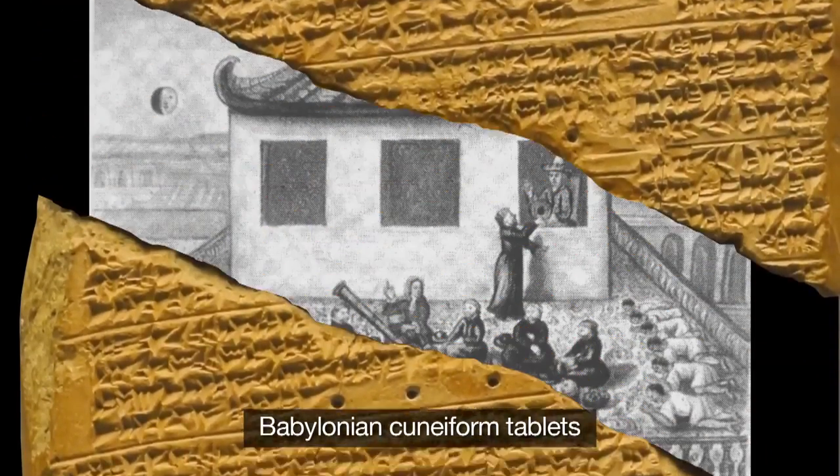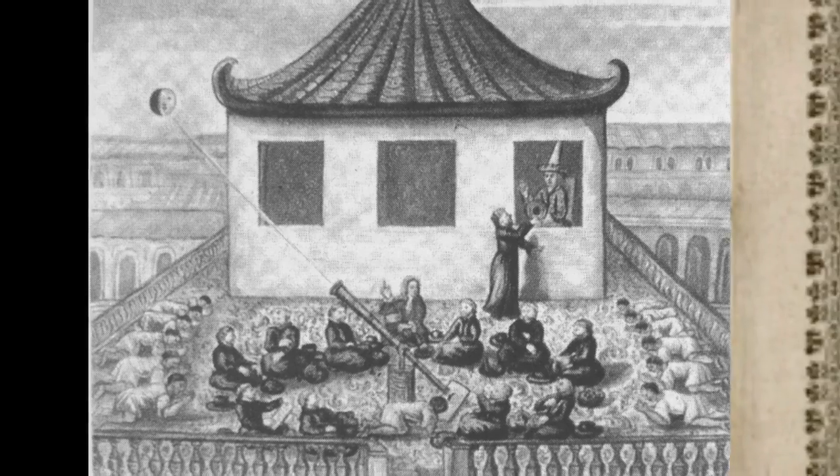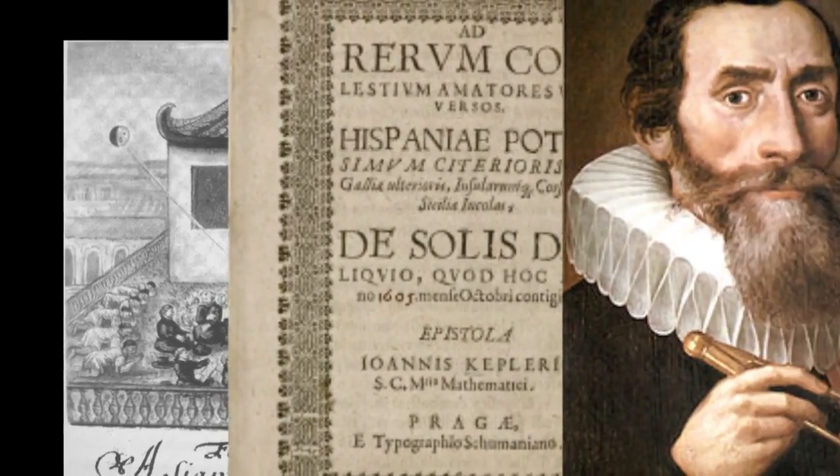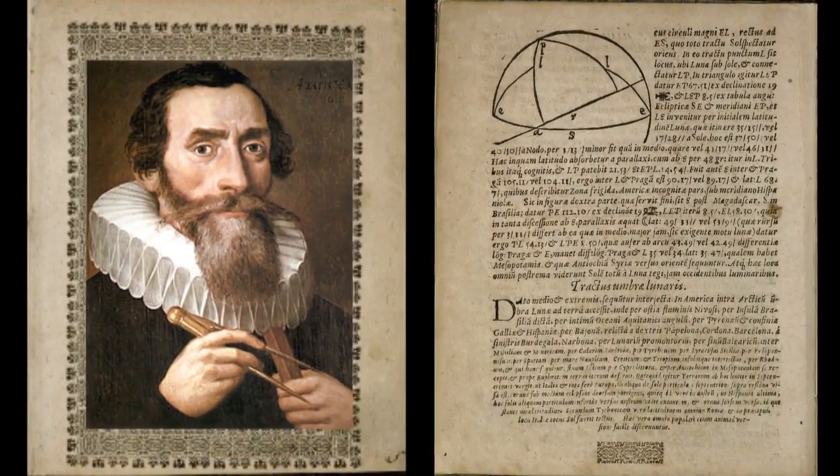The Babylonians and ancient Chinese were able to predict solar eclipses as early as 2500 B.C. But it wasn't until 1605 that astronomer Johannes Kepler made a scientific observation of a total solar eclipse.